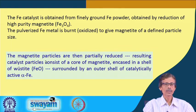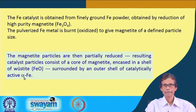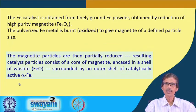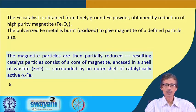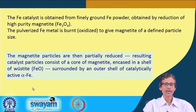Fe₃O₄ contains both ferrous and ferric states. Reduction of the ferric state to ferrous state gives a wüstite layer, which is surrounded by an outer shell of catalytically active alpha-iron. So the core is magnetite, then there is a shell of FeO, and finally the outer layer is alpha-Fe — a three-layer catalyst system. The surface-generated alpha-iron is what drives ammonia production.